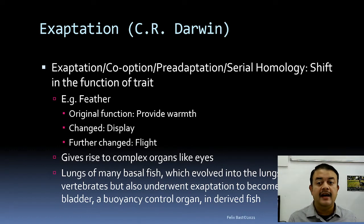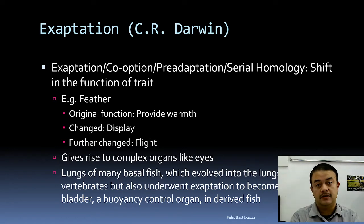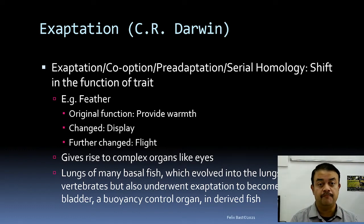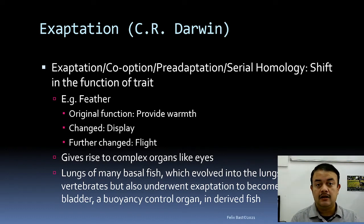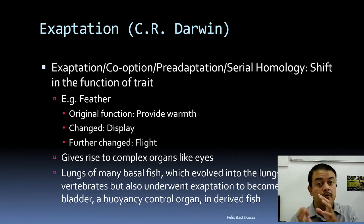One example is the bird's feather: its original function was to provide warmth, similar to fur. The function then shifted to sexual display — as still seen in the peacock dancing with its feathers for a mate. It then changed further to enable flight. This keeps changing — that is serial homology, or exaptation — and it's why complex organs like the human eye evolved.